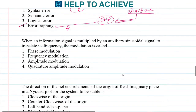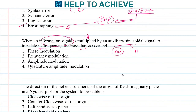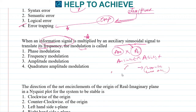Next: when an information signal is multiplied by an auxiliary sinusoidal carrier signal to translate its frequency, what modulation is this? If the information signal is Am·sin(ωm·t) and the carrier is Ac·sin(ωc·t), multiplying them generates frequencies (ωm + ωc) and (ωm − ωc). This is a product or balanced modulator, which is a type of amplitude modulation. The correct answer is amplitude modulation.